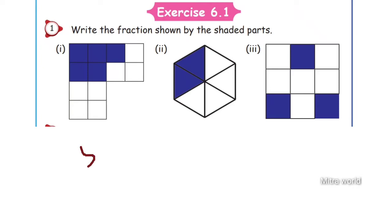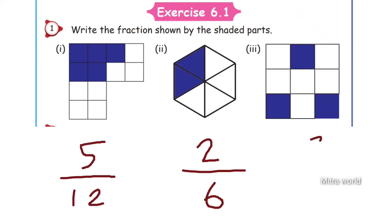The second one: total parts are 6, and two parts are shaded, so the answer is 2 by 6. The third one is very simple: 3 by 9.